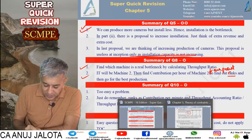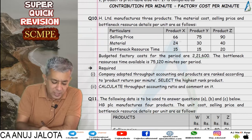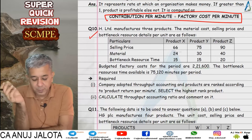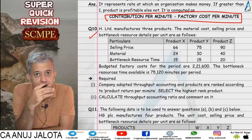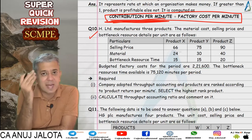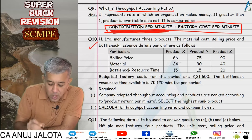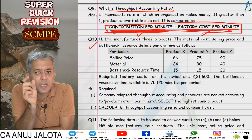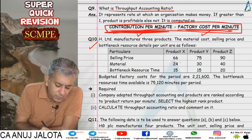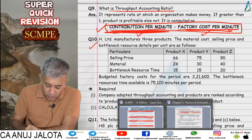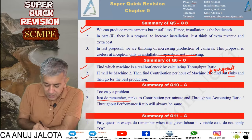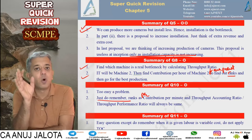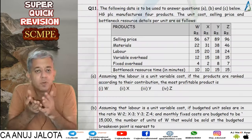Question number 10 required computing the throughput accounting ratio: contribution per minute divided by factory cost per minute. An important insight: ranks based on contribution per minute and ranks based on throughput accounting ratio are always the same. This is because factory cost per minute is the same for every product — so if a product has a higher contribution per minute, it will also have a higher throughput accounting ratio. So the ranking doesn't change.